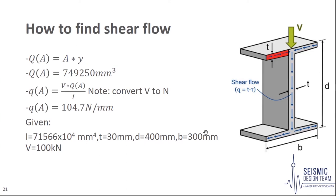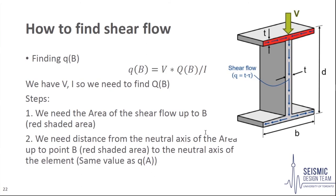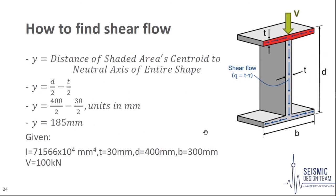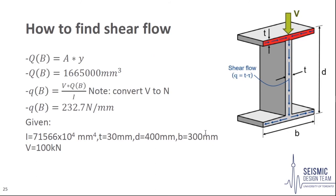Next, we find the shear flow at B, where the two flanges and the web meet. We need the area up to B, shaded in red, and the distance y, which is the same as in the previous calculation since the neutral axis of the shaded region has not changed. The area B is b multiplied by t, giving 9,000 mm². With y equal to 185 mm, the first moment of area is 1,665,000 mm³, giving a shear flow of 232.7 N/mm at B.